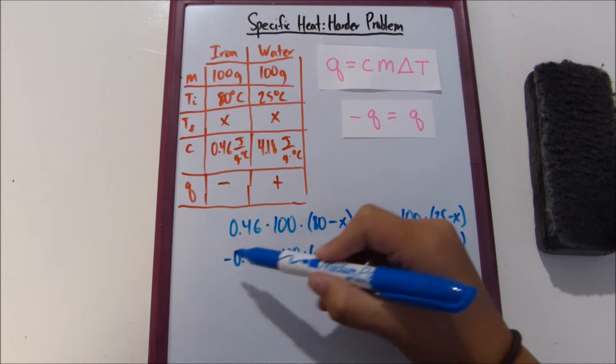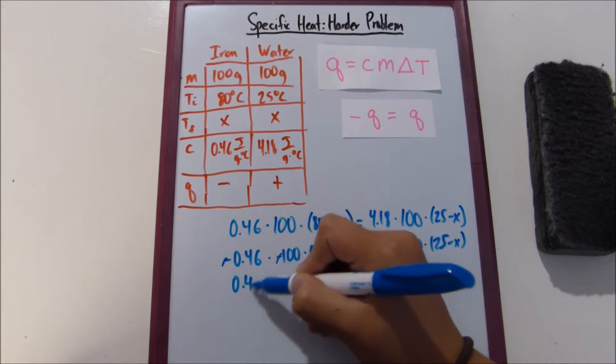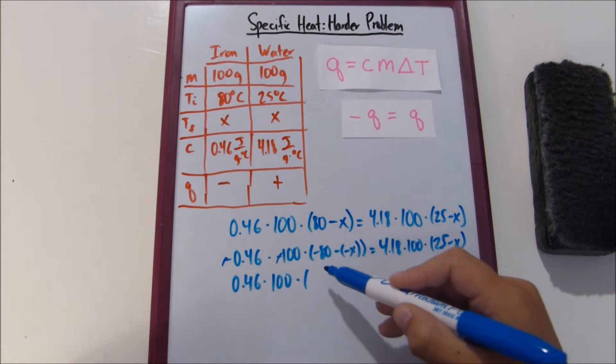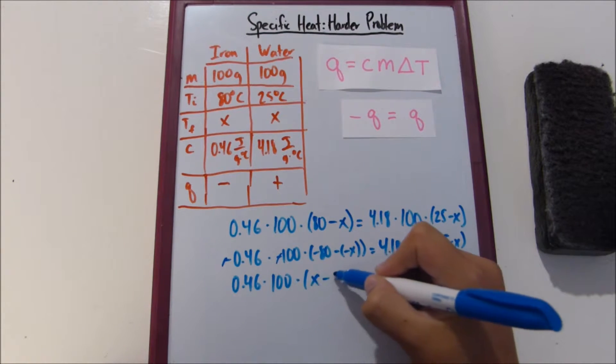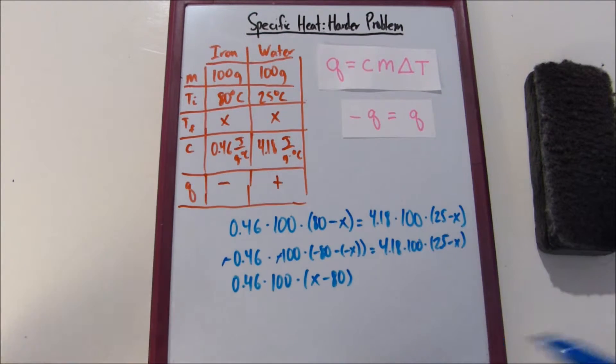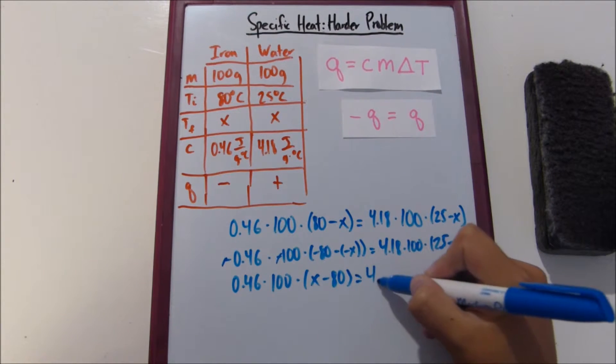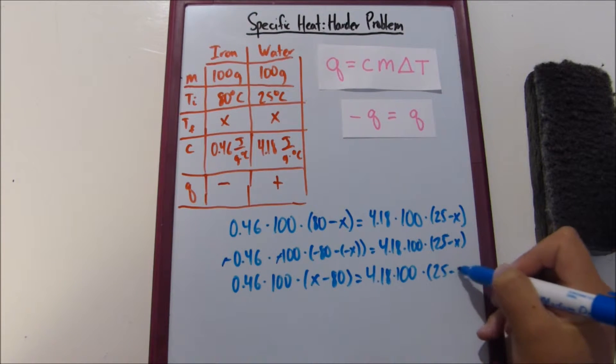All right, so these two negatives cancel. So it's essentially the same thing that we had before, but then here saying negative 80 plus X is essentially the same thing as saying X minus 80. So you see that negative 80 plus X, you just swap them.